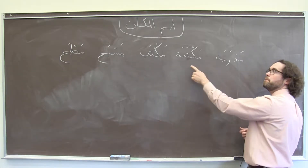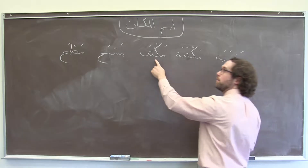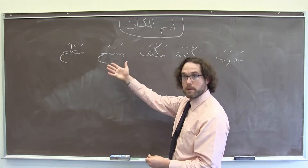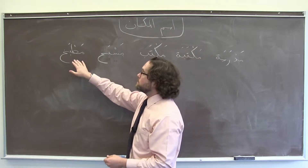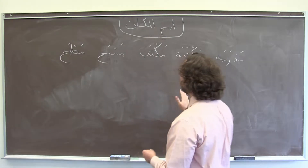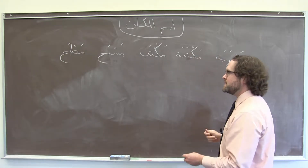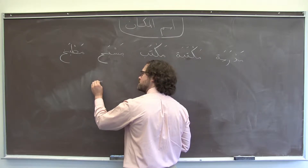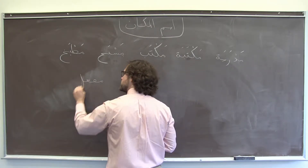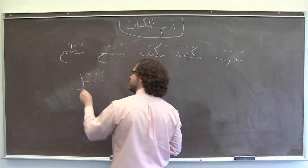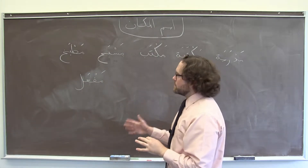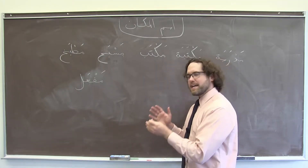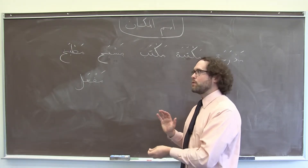مدرسة, meaning school. مكتبة, library. مكتب, a desk or an office depending on the context. مسبح, swimming pool. And مطبخ, kitchen. What they all have in common is that they are built on the same pattern, the same وزن: مفعل, which is the pattern that we use to take a Form 1 verb and make a place noun out of it.